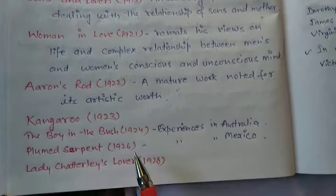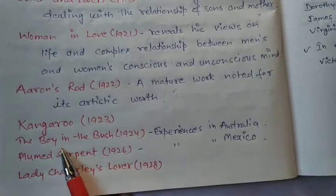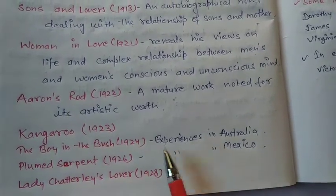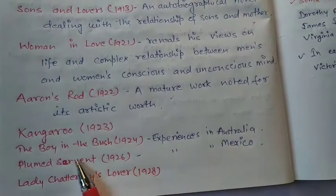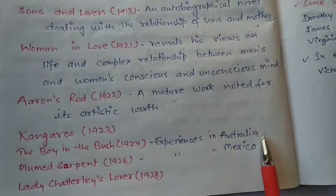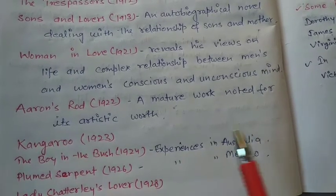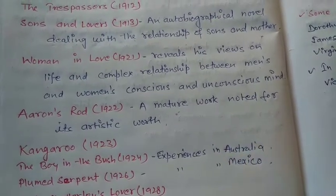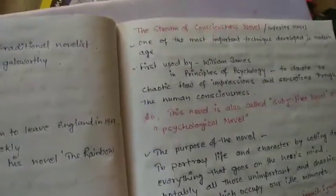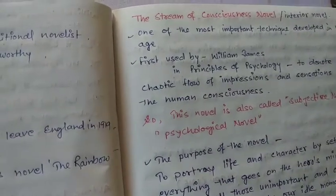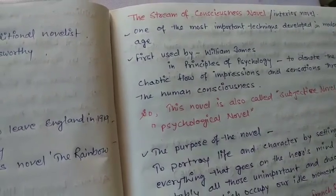If we go and see it here: Kangaroo — his experience in Australia; and Plumed Serpent — his experience in Mexico. Because D.H. Lawrence was traveling here and there, wherever he had experiences he could write about them. So you can join this way. And because of this particular modern age chapter, I was writing this section — this is a modern age chapter.